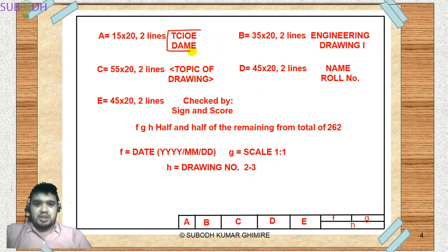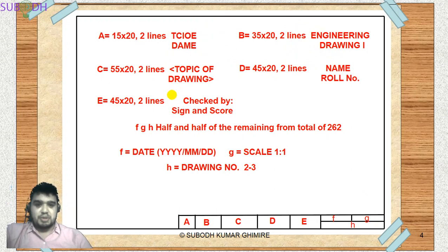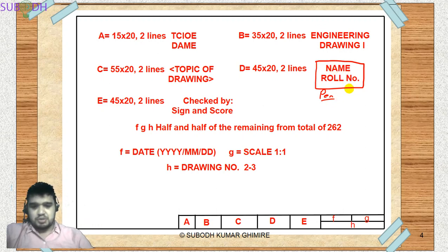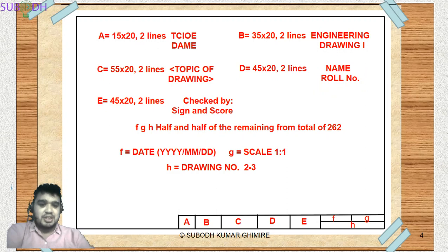The pencil we use for lettering is 2H. For borders and the title block, we use HB. All text should be in all caps — capital letters. A personal suggestion: for the name and roll number portion, you can use a pen — a dot pen or ballpoint pen — since ink pen may bleed through the paper. A general dot pen or ballpoint pen is recommended for name and roll number.